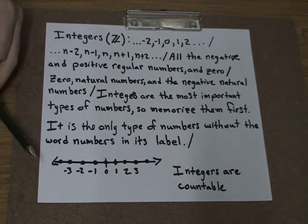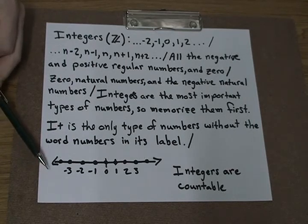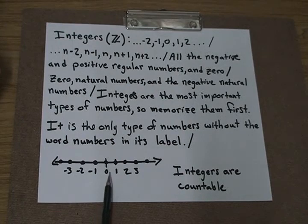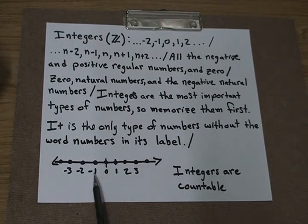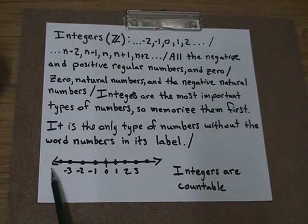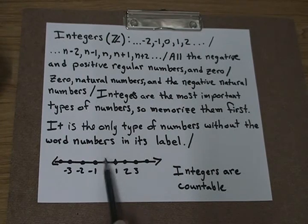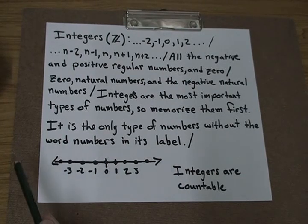The graph of the integers, once again, we would start at the number 0, and it goes 1, 2, 3 going on to positive infinity, and going the other direction, -1, -2, -3 going on to negative infinity. Since you can count them starting at 0, integers are countable.